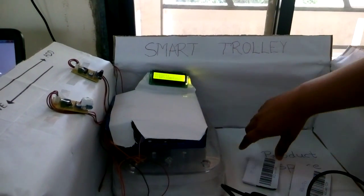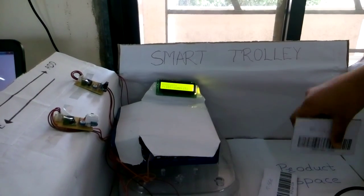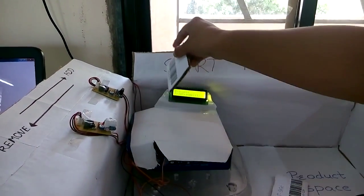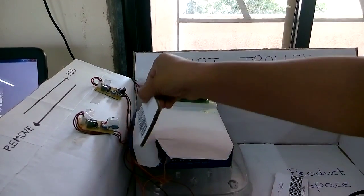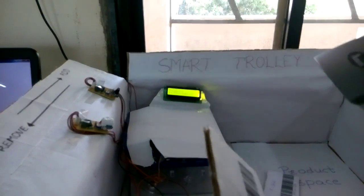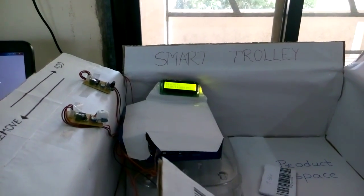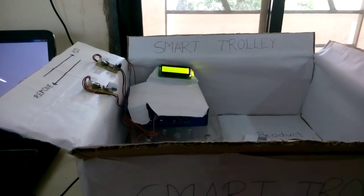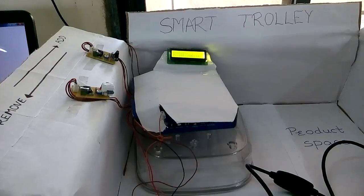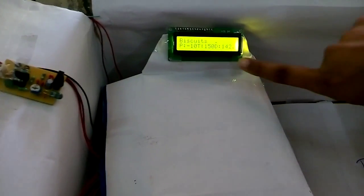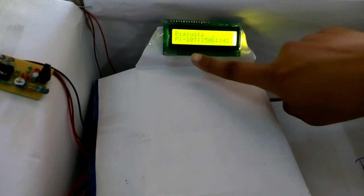Now let's remove one product from the trolley. Let's remove biscuits. For this we have cut the two IR sensors in opposite sequence and scan the same product. We can see the product, we can see that the biscuits are deducted, that is the price is deducted from the total price.